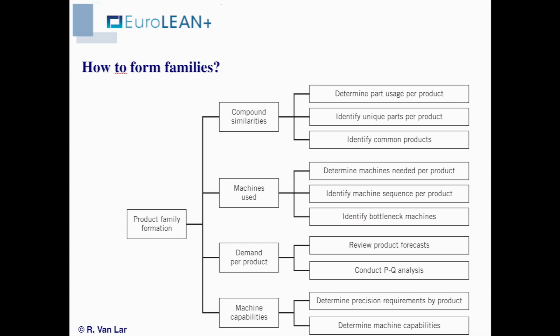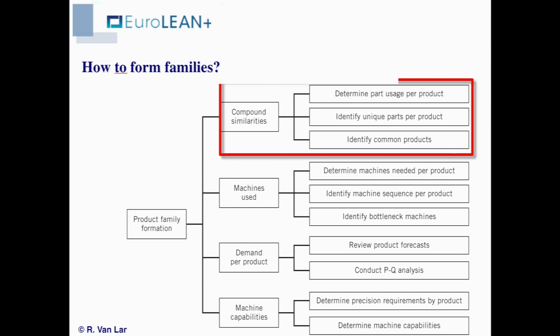This means that we have to take into account the characteristics of the product to determine how to fit them together. One element is that we look at the similarities of the products themselves, meaning we look at the yearly part usage per product, the variety of parts that go into finished products, and from that identify common products that use the same parts and have more or less the same level of usage.